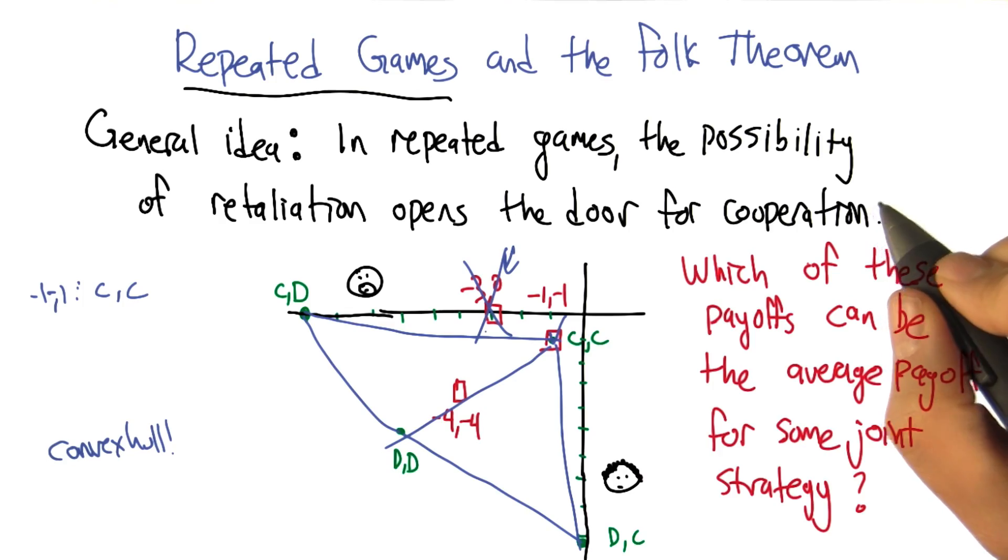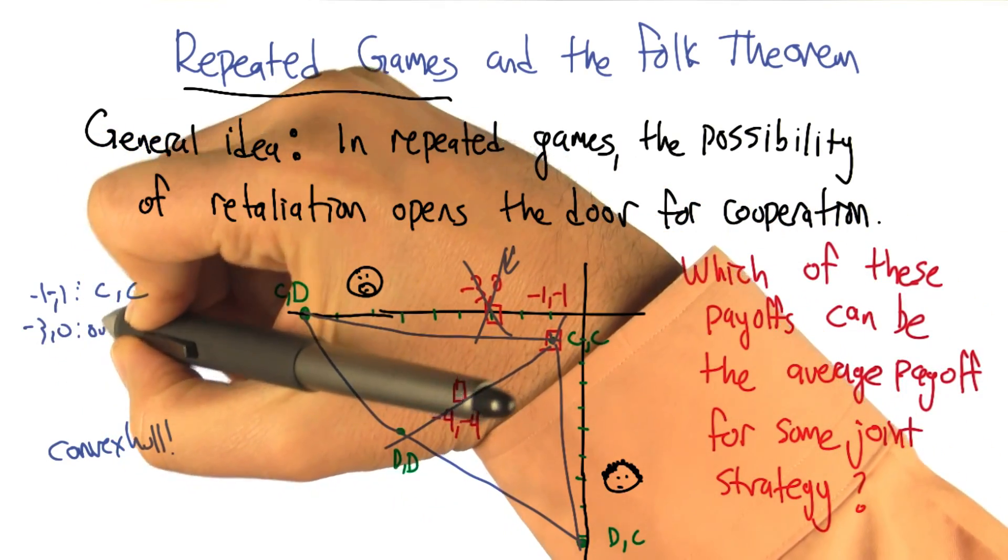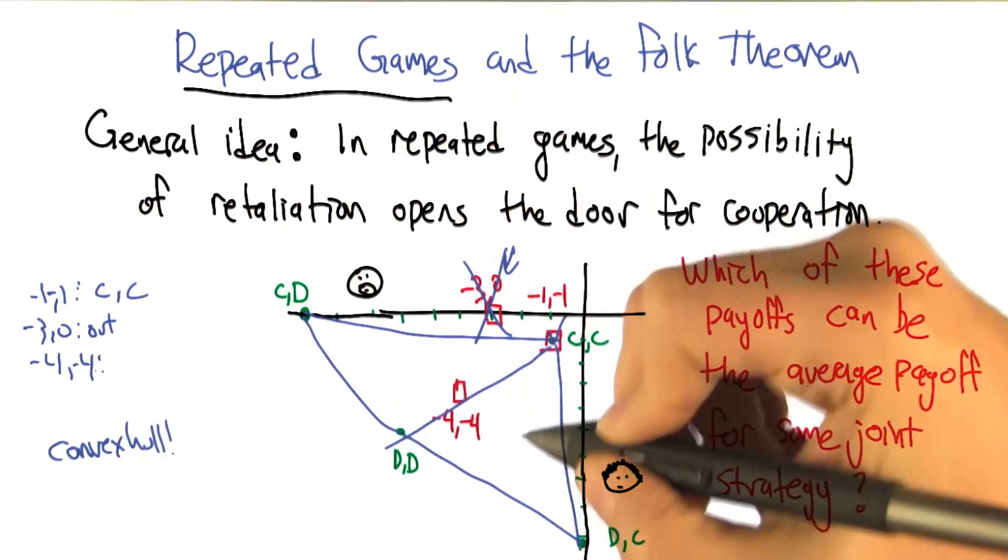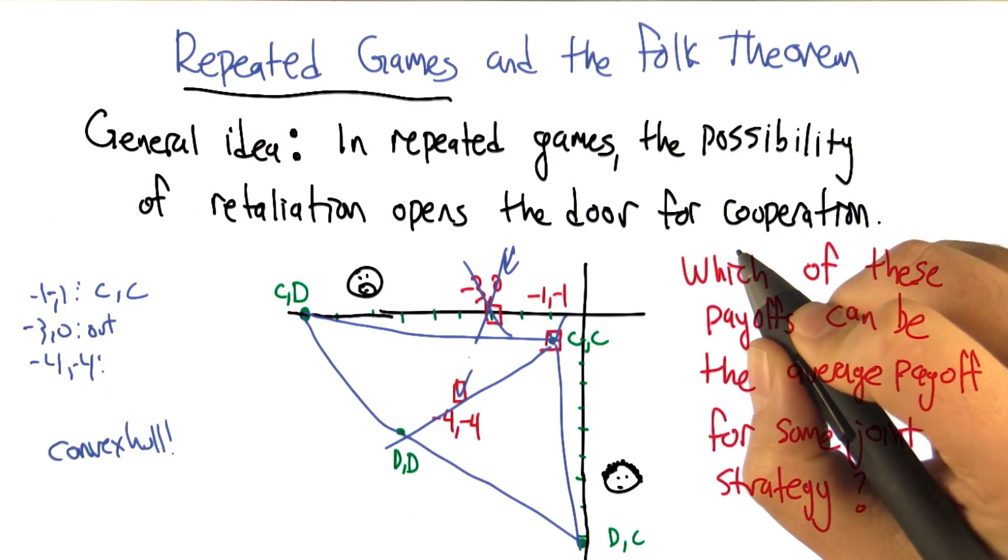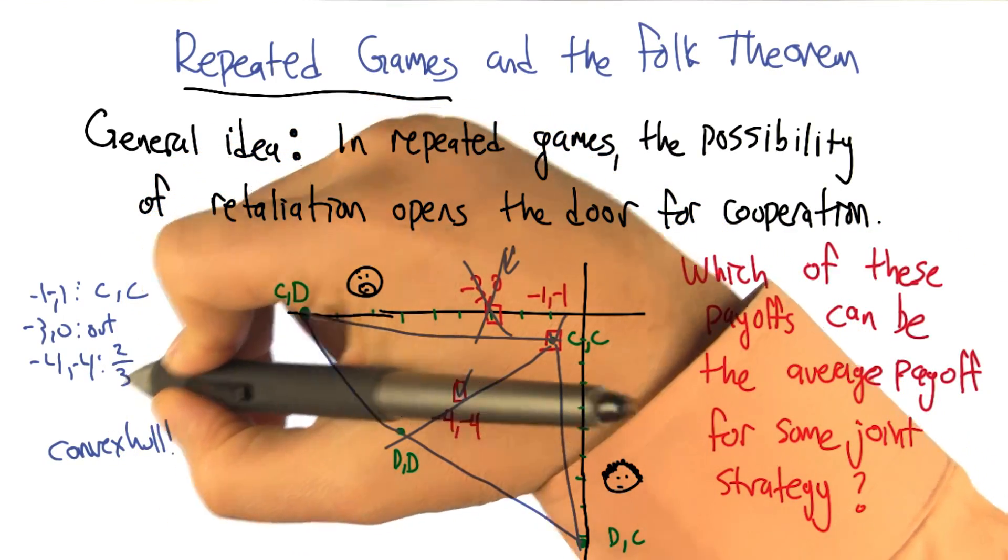So that leaves minus four, minus four, and it seems pretty, that's inside the convex hull, so there is some combination of them that would work. That's right. Any sense of what it would be? Two-thirds. I think two-thirds dd, one-third cc.